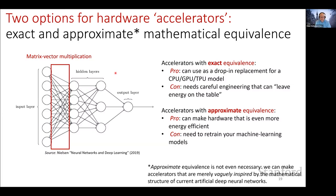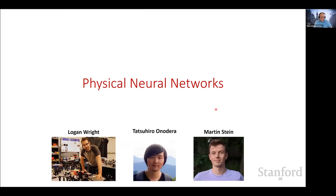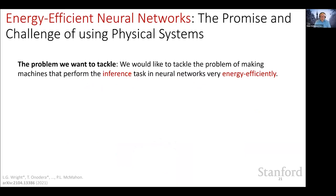We're trying to build hardware accelerators for machine learning where we have only an approximate or vaguely inspired connection with the canonical mathematics, but we still want to see if this works. We call this Physical Neural Networks — building neural networks out of physical systems. This work was led by two postdocs in my group, Logan Wright and Tatsuhiro Onodera, ably assisted by PhD student Martin Stein.